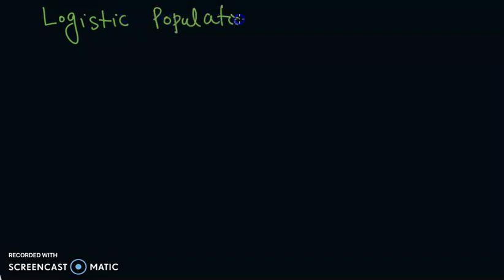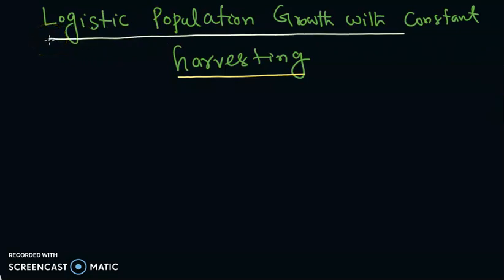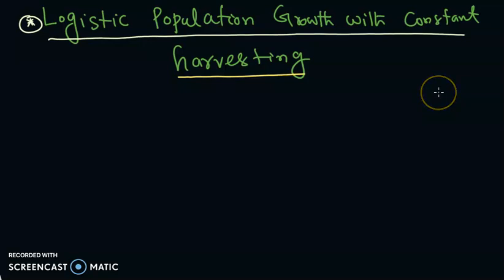Bismillahirrahmanirrahim. Assalamu alaikum. We have already seen the simplistic population model and the logistic population growth model. Now we are in a position to discuss logistic population growth with constant harvesting. Harvesting means the reduction in the population due to certain factors. In a certain system, not only is the population growing, but there is also a factor of constant reduction in the population.